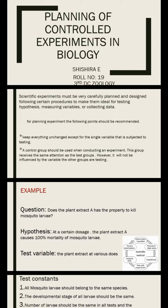For planning experiments, the following points should be recommended. Keep everything unchanged except the single variable that is subjected to testing. A controlled group should be used when conducting an experiment. This group receives the same attention as the test group; however, it will not be influenced by the variable the other groups are testing.